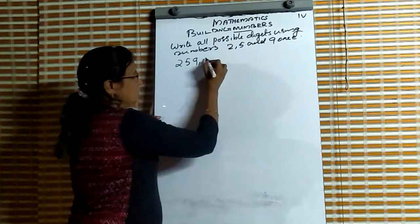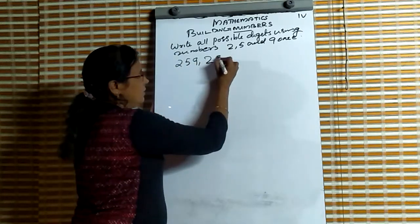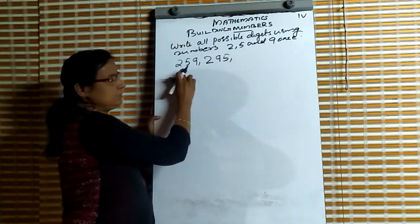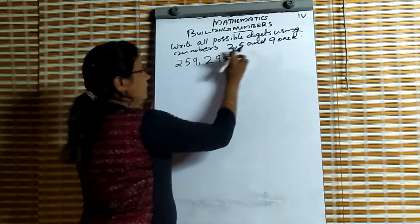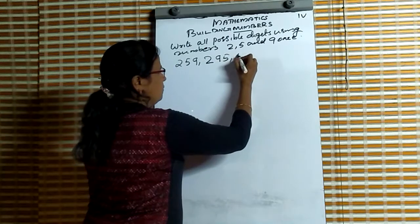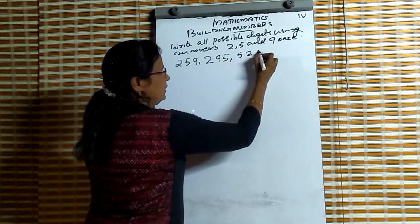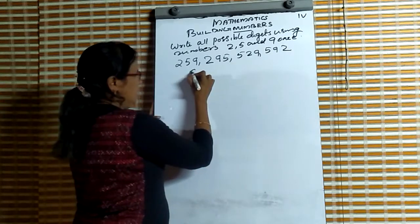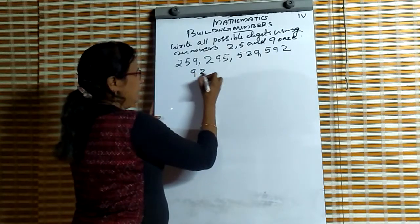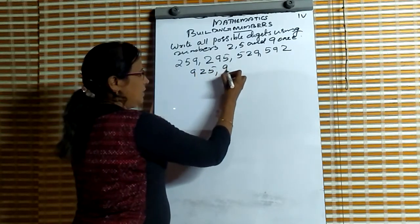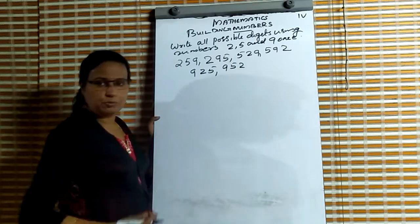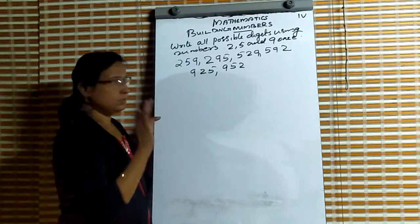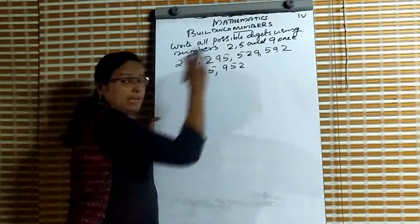First: 259. Next: 295. Those are the numbers starting with 2. Then 5: 529 and 592. Then 9: 925 and 952. These are the 6 possible numbers using digits 2, 5, 9.